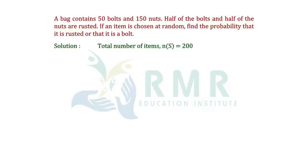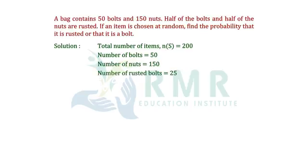Total number of items, n(S) equals 150 nuts plus 50 bolts, that is 200. Number of bolts is 50. Number of nuts is 150. Number of rusted bolts, that is half of the bolts, 50 divided by 2 equals 25. Number of rusted nuts, half of the nuts, that is 150 divided by 2 equals 75.